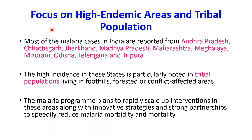Most malaria cases in India were reported from Andhra Pradesh, Chhattisgarh, Jharkhand, Madhya Pradesh, Odisha, Meghalaya, Mizoram, Telangana, and Tripura. High incidence in these states is particularly noted in tribal populations. The malaria program tends to rapidly scale up interventions in these areas, along with innovative strategies and strong partnerships to speedily reduce malaria morbidity.